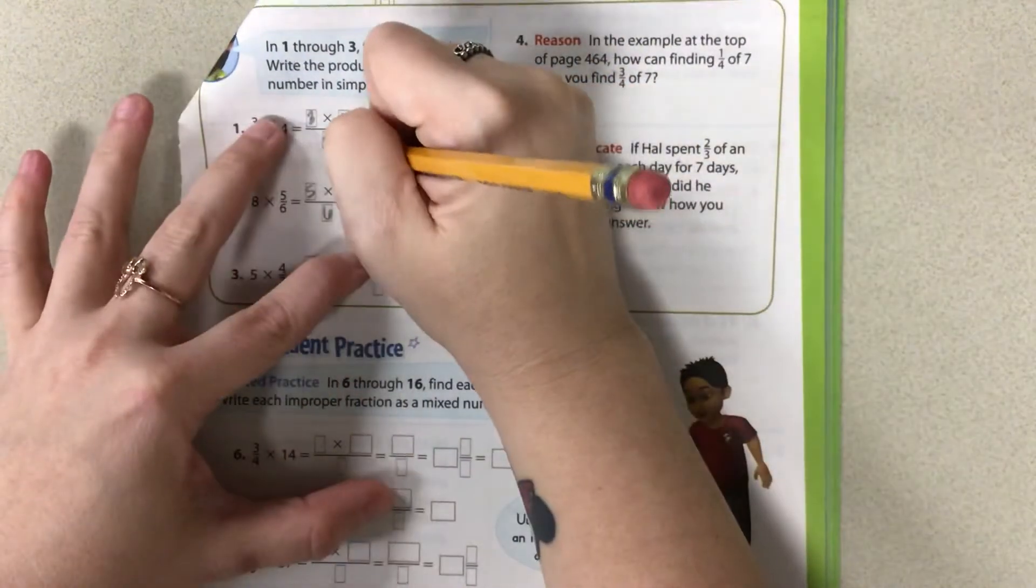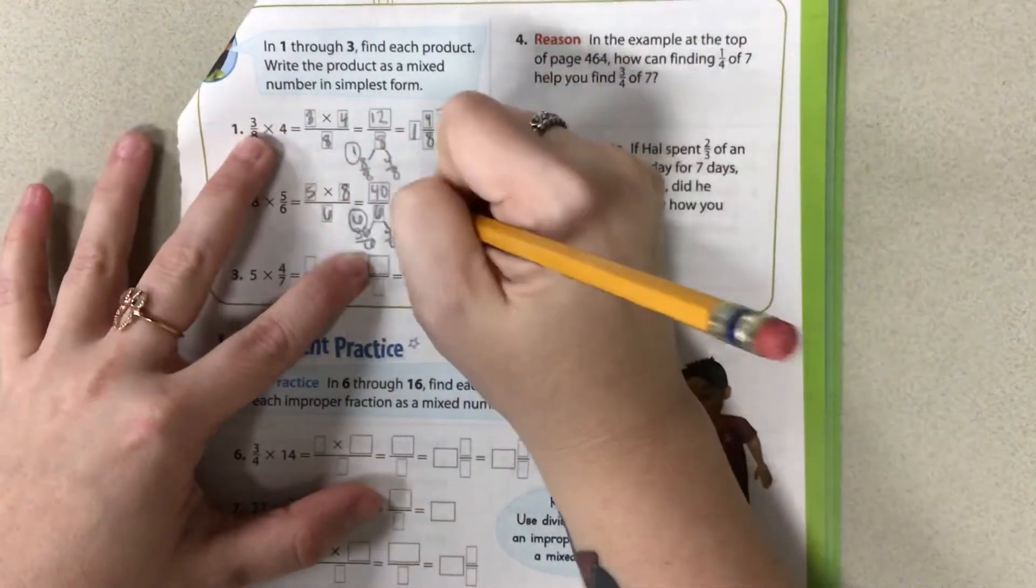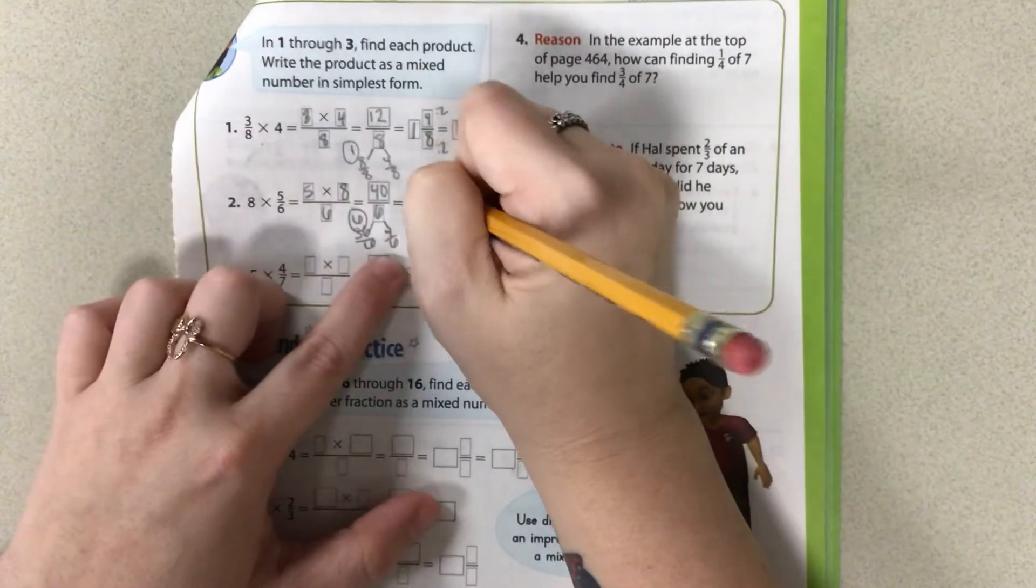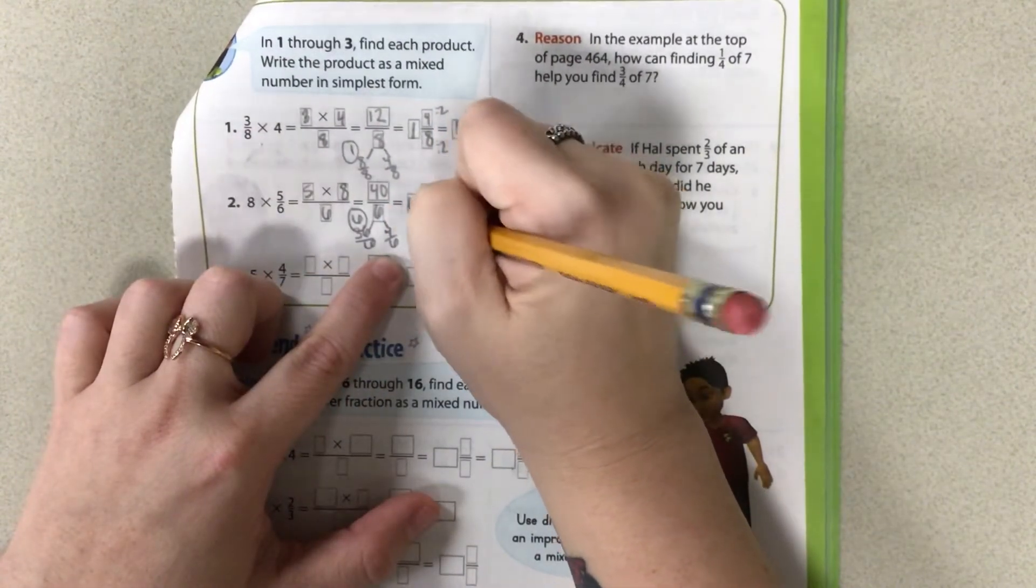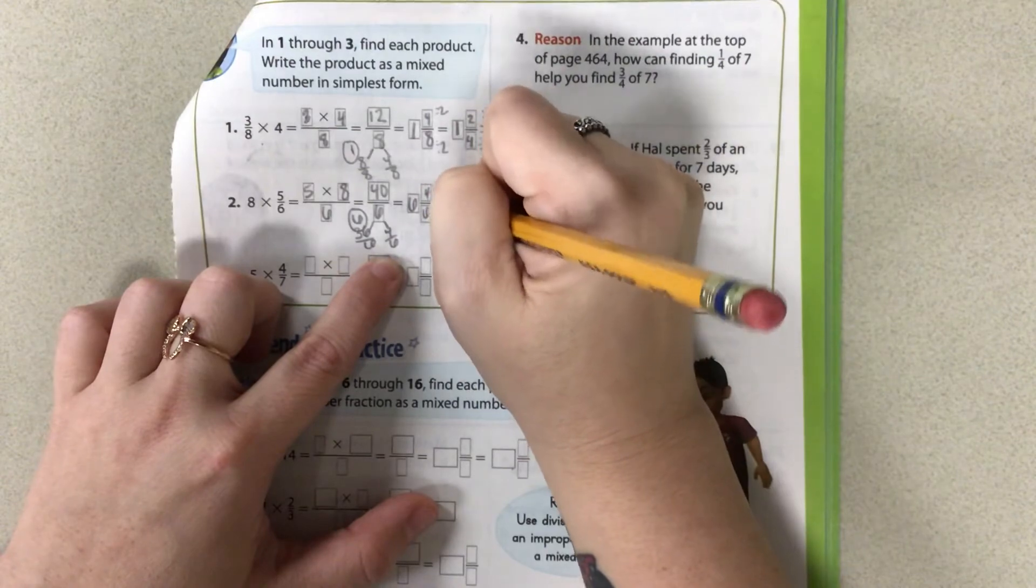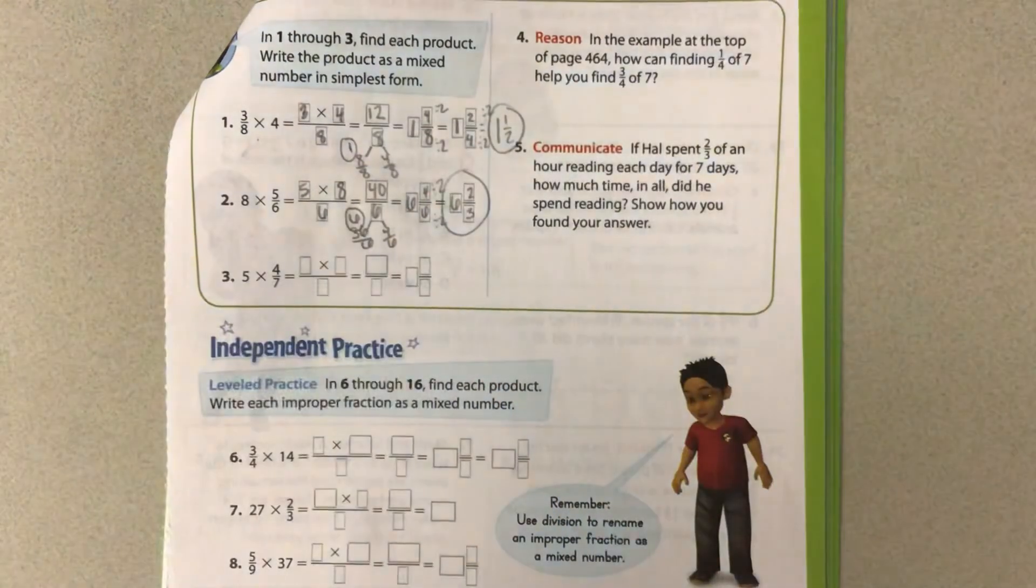So I have 36 sixes. And then I have 4 sixes. So this would be 6. Just like this is 1 whole. This is 6 wholes. So I have 6 wholes and 4 sixths. I can divide both sides by 2. So then I get 6 and 2 thirds as my answer.